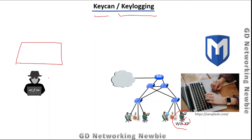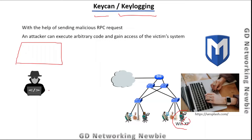To perform this activity we need to have access to the victim's machine. For our demonstration we have taken Windows XP and I have a Kali Linux machine. On Windows XP we have RPC service running, and to exploit that RPC we need to send some code to the victim machine and then use the Metasploit framework to gain access to the victim's machine.